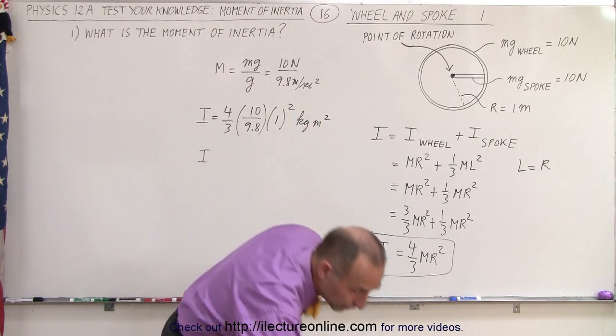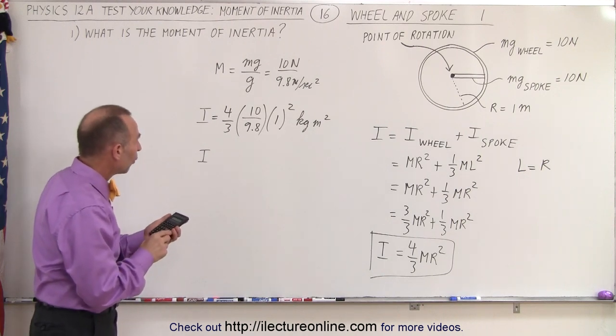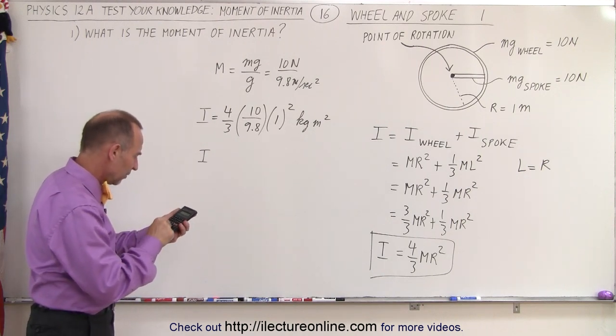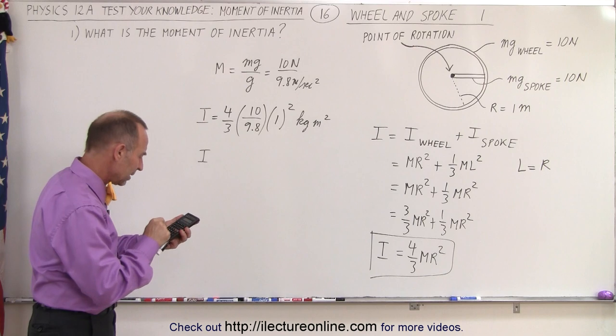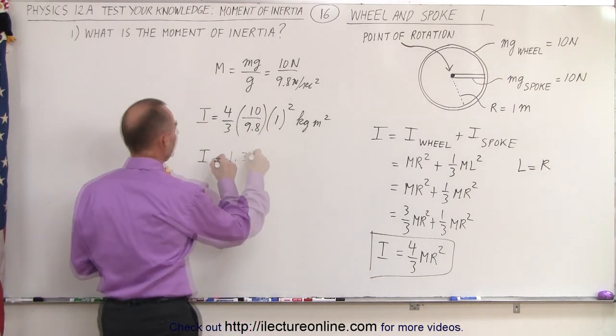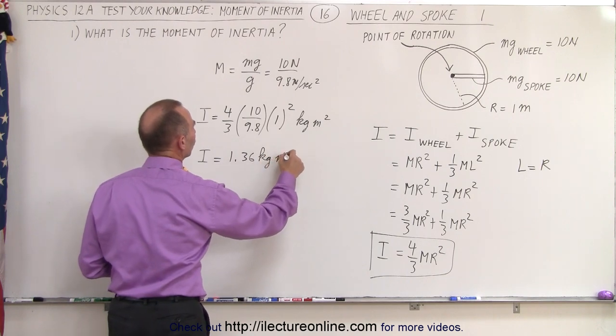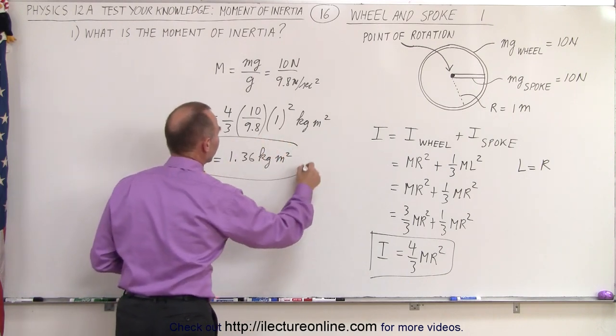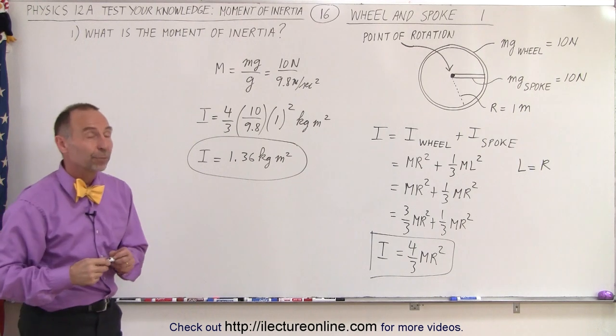Now with a calculator, we get 40 divided by 3 divided by 9.8 equals, so we get 1.36 kilogram meter squared for the first answer for the first part of this problem.